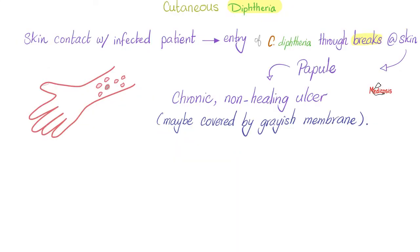Cutaneous diphtheria: skin contact with an infected patient leads to entry of Corynebacterium diphtheriae through breaks in your skin. It starts as a papule, then develops into a chronic non-healing ulcer, sometimes covered by a grayish pseudomembrane — not a true membrane.